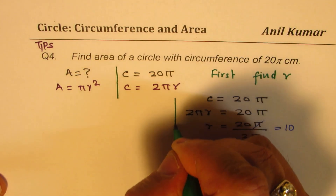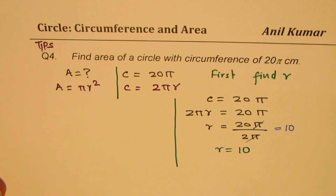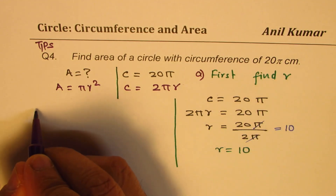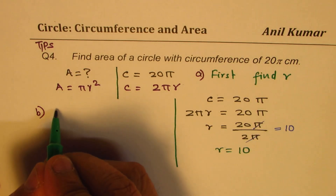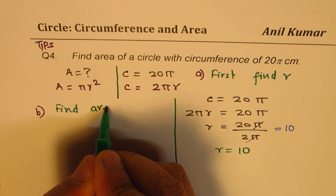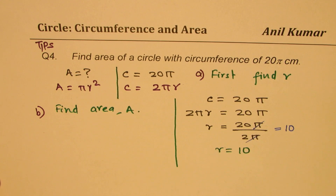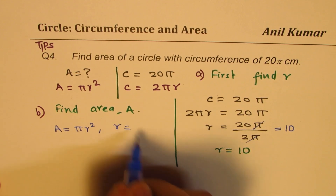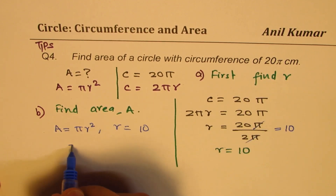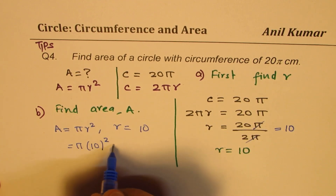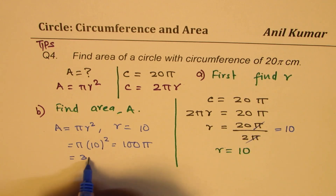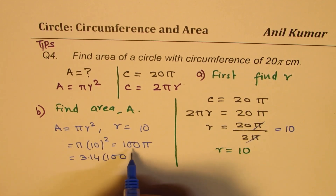Once you get the radius, it is easy to find area. First step: find radius. Second step: find area. Area equals πR squared. We know R equals 10, so we put 10 here: π times 10 squared equals 100π.